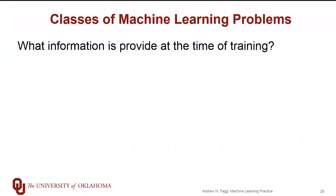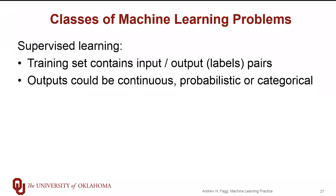Another broad dimension is the type of information available at the time we're training our models. One end of the spectrum is supervised learning, where our training set contains input and output pairs — given some particular input, this is the output we should be producing. These outputs can be continuous, categorical, or probabilistic; that's an independent choice that can be made.